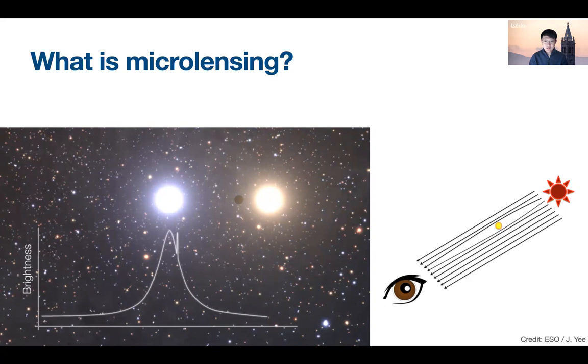In the case of a single-lens star and a single-source star, the time series of the total brightness, which is called the light curve, would be symmetrical and described by a very simple analytic formula. But when the lens star is either a binary system of two stars or a system of an exoplanet and its host star, which we're particularly interested in, the modeling of the light curve becomes much more complicated.